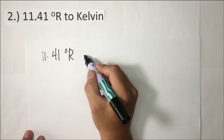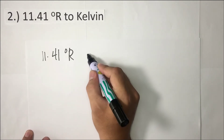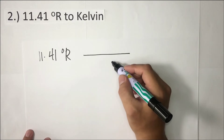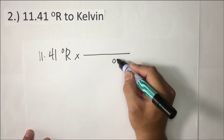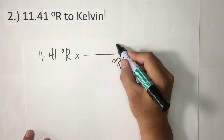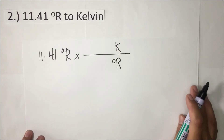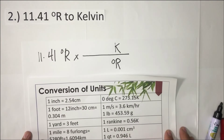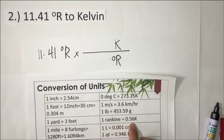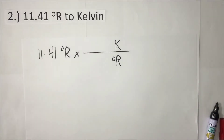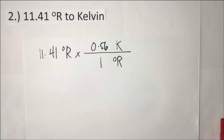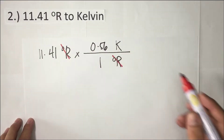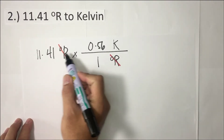Let's write the given first: 11.41 degrees Rankine, to be converted to Kelvin. Put a bar sign and a multiplication sign. The unit we need to cancel is degrees Rankine, so we place it in the denominator. The desired unit is Kelvin, so we place it in the numerator. According to the conversion table, 1 degree Rankine is equivalent to 0.56 Kelvin. Cancel degrees Rankine.